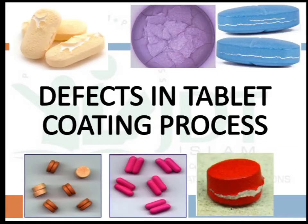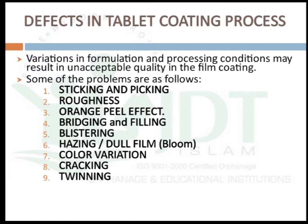In this video we will discuss the different defects faced in the tablet coating process. Sometimes due to variation in the formulation of coating solutions or variation in processing conditions, unacceptable quality may result in the film coating process. The different defects faced in film coating are: sticking and picking, roughness, orange peel effect, bridging and filling, blistering, hazing or dull film, color variation, and cracking and twinning. We will discuss each defect and its rectification method in detail.